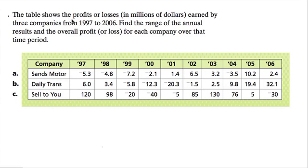In this problem we have a table that shows both profit and loss in millions earned by three companies from 1997 to 2006. Find the range of the annual results and the overall profit or loss for each company over the time period. Here's the time period right here going along the table and then one, two, three companies.